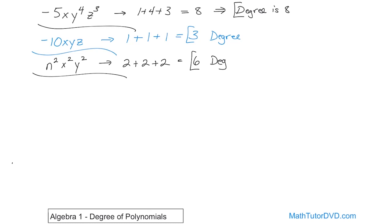So far it's been very simple because they're all just one term, so you just add them up. But what if you had a real polynomial like 3x squared minus 7x plus 4? You have now three terms — this is a trinomial. So you find the degree of each term, and then figure out which one is largest. That would be the degree of the entire polynomial.